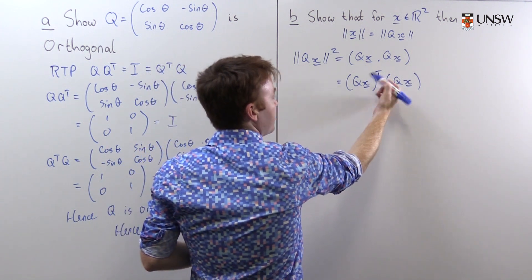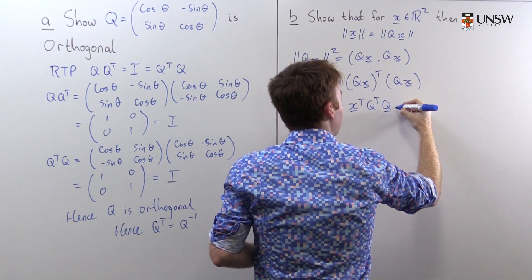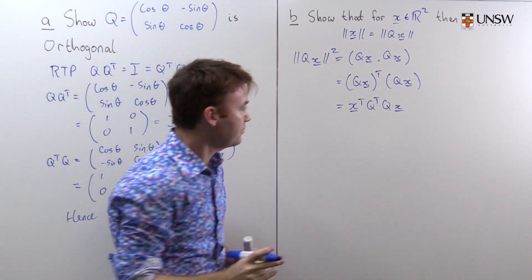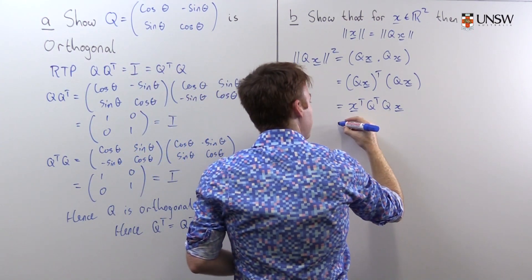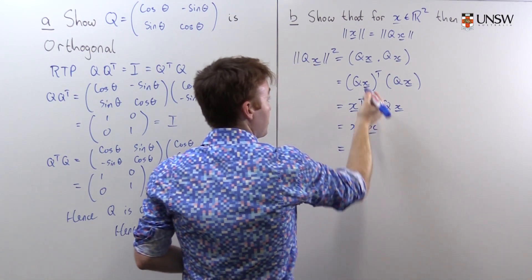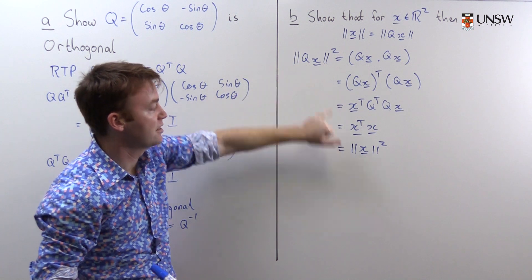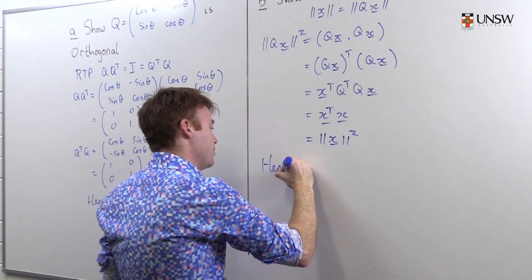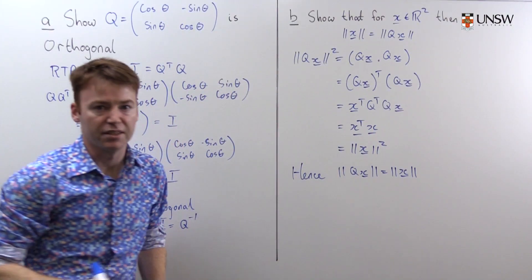The reason I write it this way is because I can take the transpose inside and get x transpose Q transpose Q x. From part A, because Q is orthogonal, Q transpose Q is the identity matrix. So I end up with x transpose x, which is just ‖x‖². The square of the length of Qx equals the square of the length of x, and taking square roots gives ‖Qx‖ = ‖x‖.